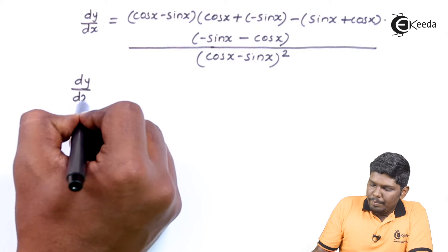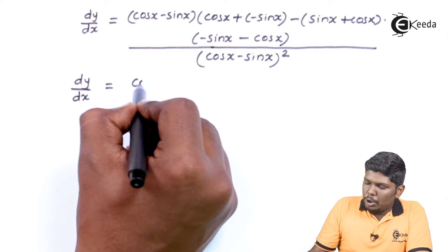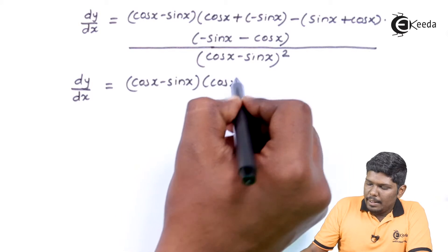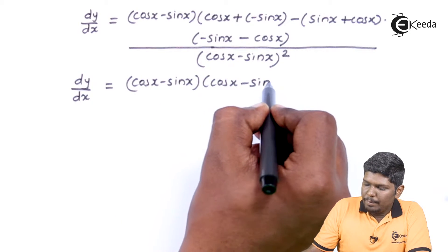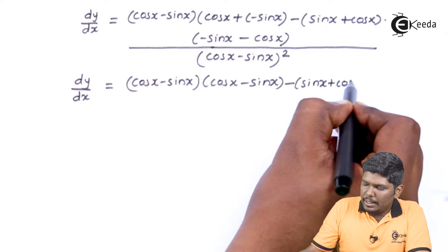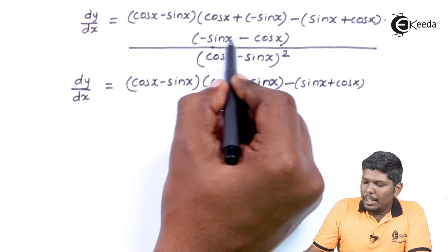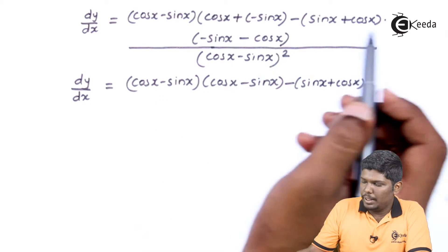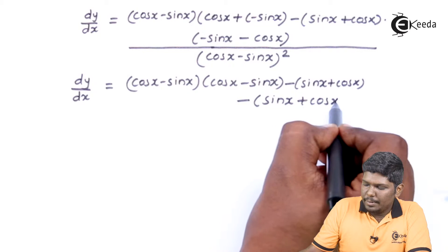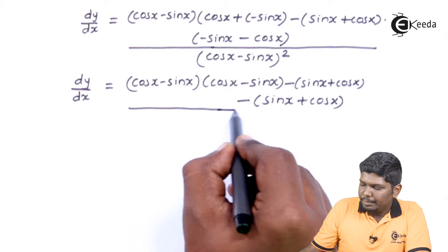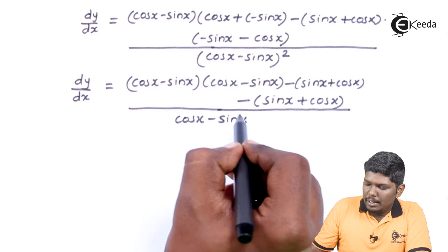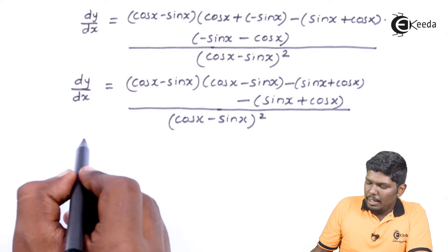dy by dx is equal to cos x minus sin x into cos x plus minus sin x, plus cos x plus sin x plus cos x. Taking minus, we have minus sin x plus cos x upon v squared, that is cos x minus sin x the whole square.